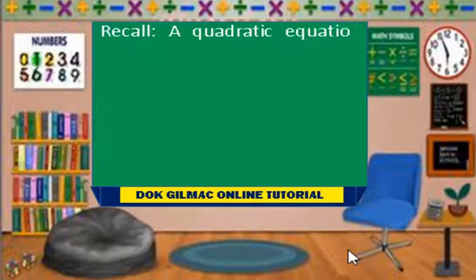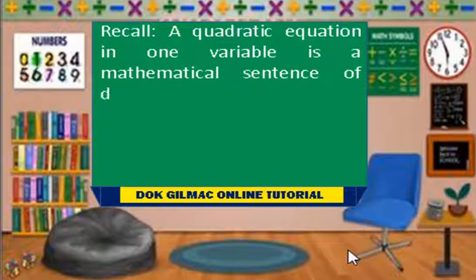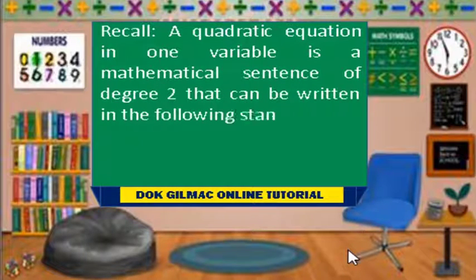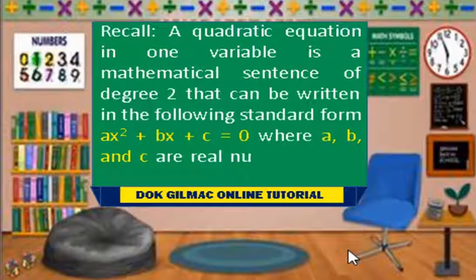A quadratic equation in one variable is a mathematical sentence of degree 2 that can be written in the standard form ax squared plus bx plus c equals 0, where a, b, and c are real numbers and a is not equal to 0.